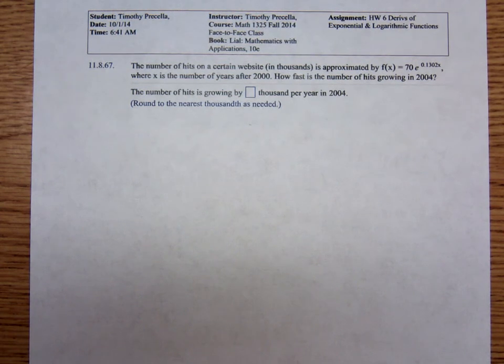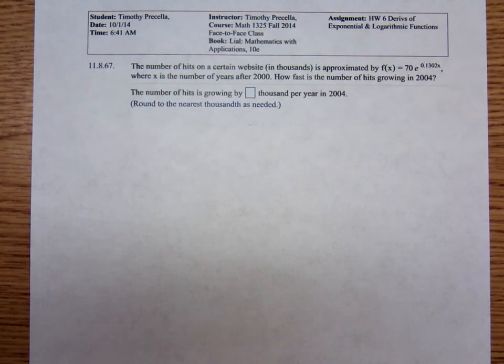The number of hits on a certain website in thousands is approximated by f(x) equals 70e to the 0.1302x, where x is the number of years after 2000. How fast is the number of hits growing in 2004?